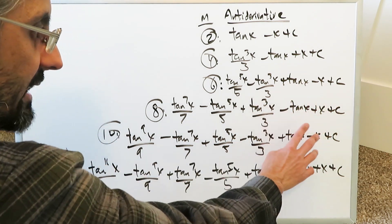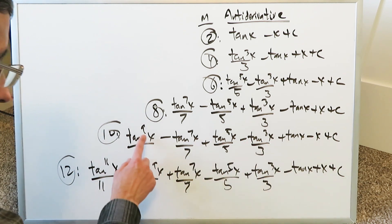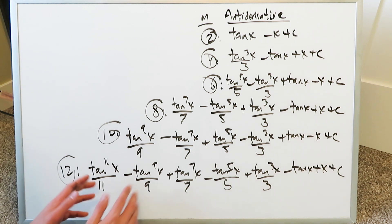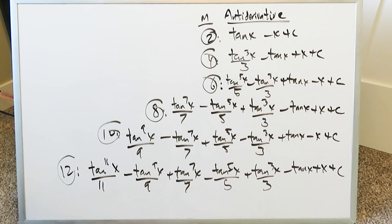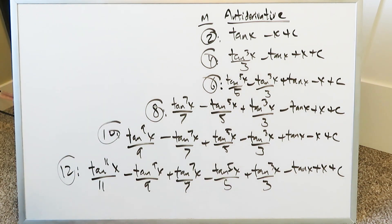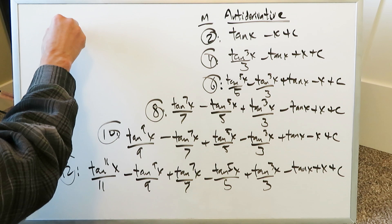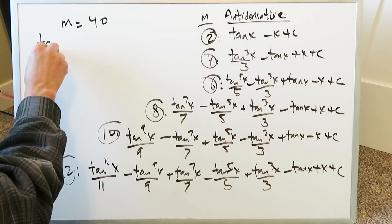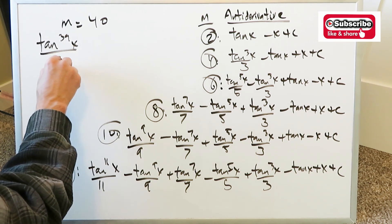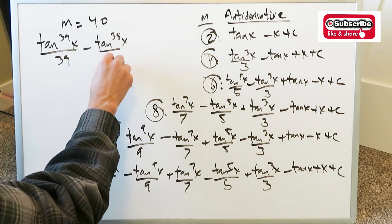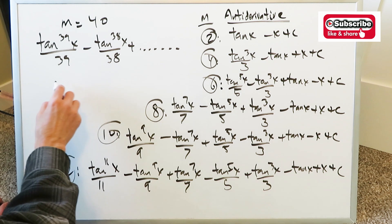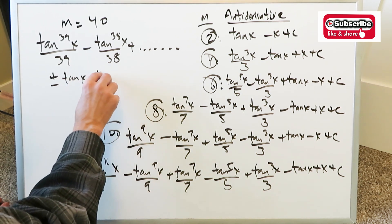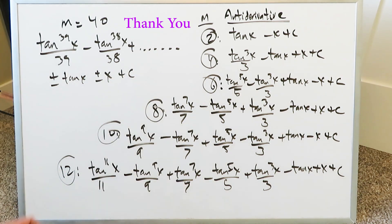It always ends with tan(x) and x, and the signs depend on the sequence: positive minus positive minus, starting with these odd exponents going all the way down. You can see the pattern is here before you. The work may be a little messy, but it all works out. You should essentially be able to do m of any even value — if m equals 40, the next term is tan³⁹(x)/39, continuing all the way down to tan(x), then plus or minus x, then plus C. Thank you for watching. Have a nice day.